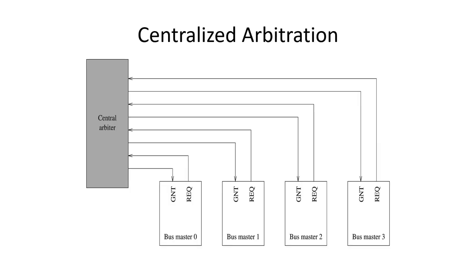In centralized arbitration, each device makes a request to some central arbiter. When they want to use the bus, they send a request on the request line. When the arbiter decides it's their turn, it will send a grant message on the grant line. That device can then use the bus until it's done, then it drops its grant and the next device can access the bus.